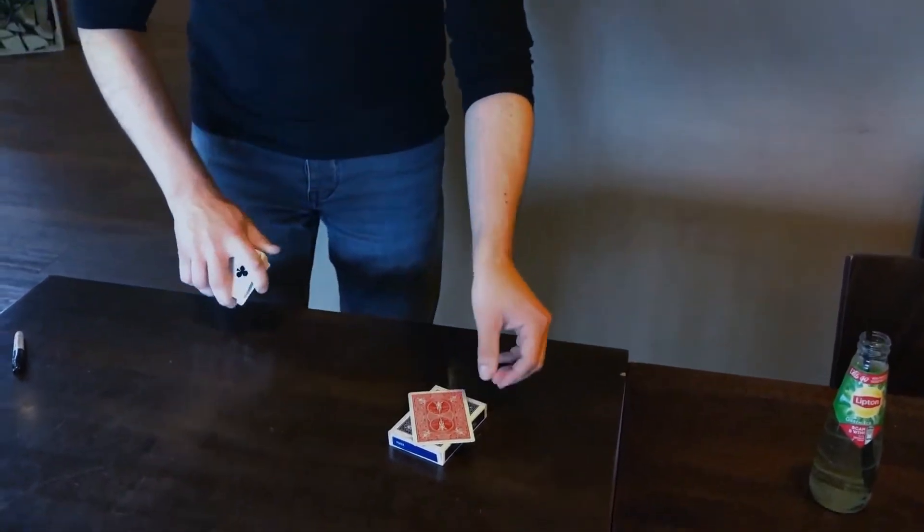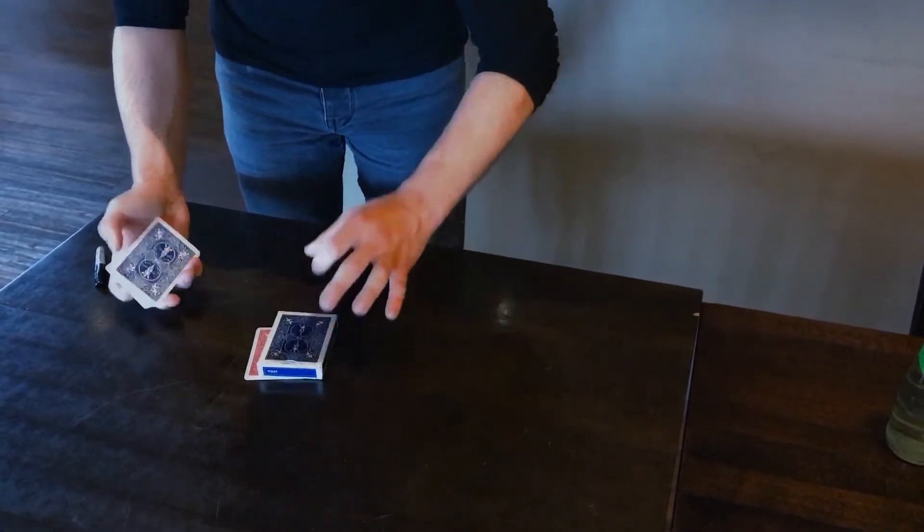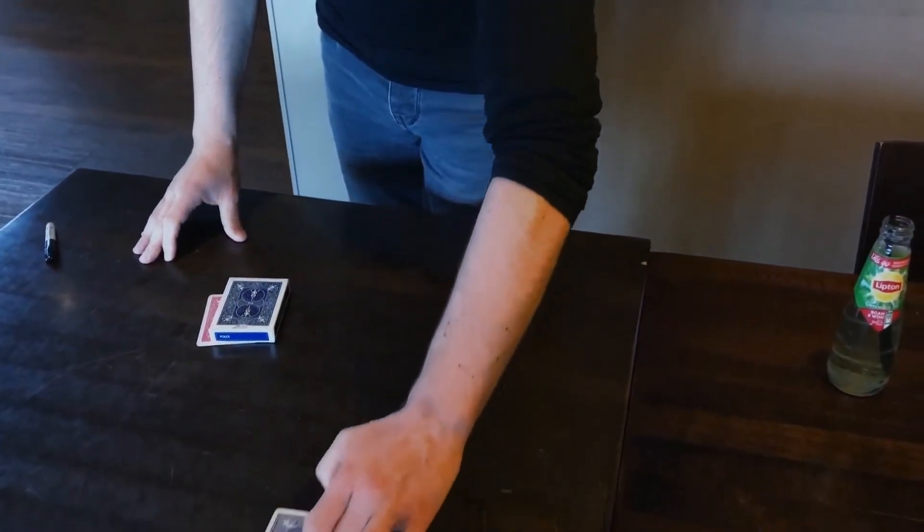Before I show you that, remember my prediction card that I placed on the box in the beginning of the trick. I'm gonna isolate the card right under the box this time because I don't want to touch it at first.